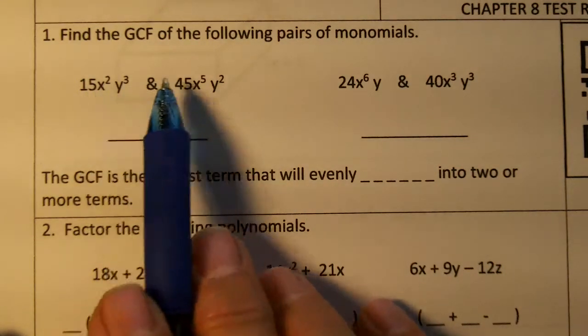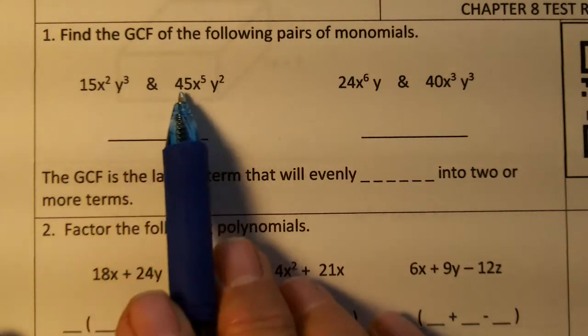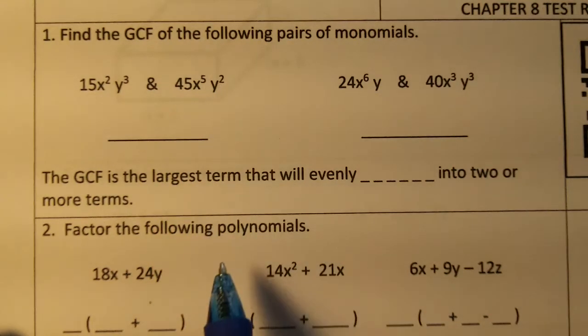Number one: 15x squared y to the third, and 45x to the fifth y squared.